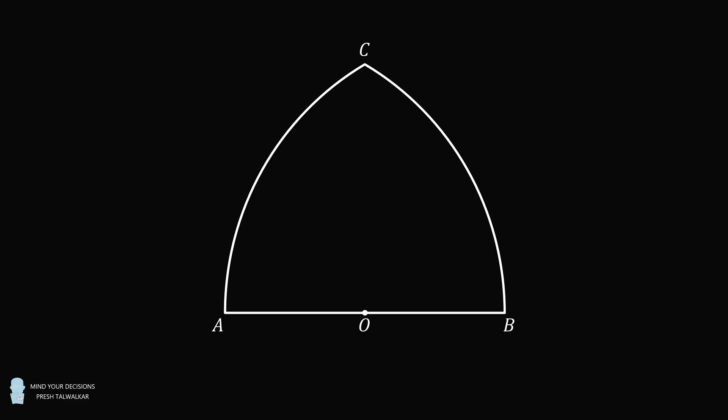Let O be the midpoint of AB. Construct a semicircle with the diameter AO, and another semicircle with the diameter OB. Let each semicircle have a radius that's equal to 1.